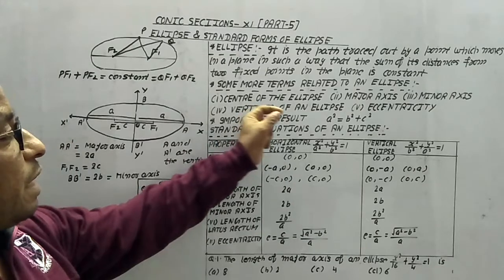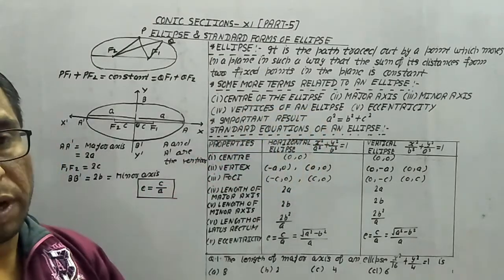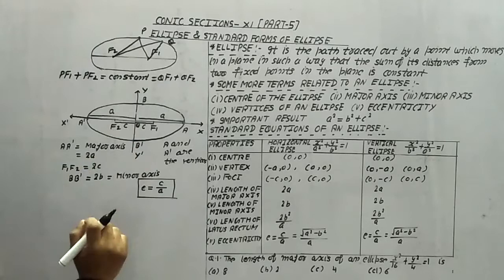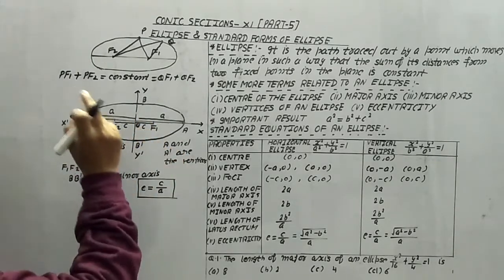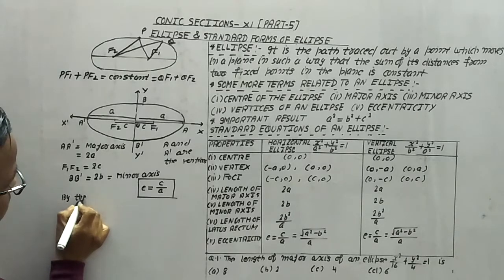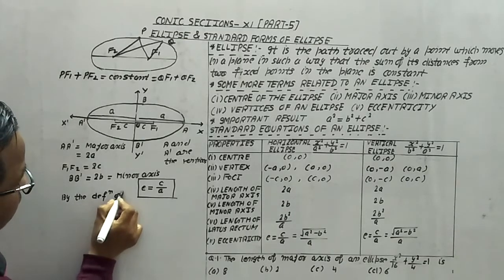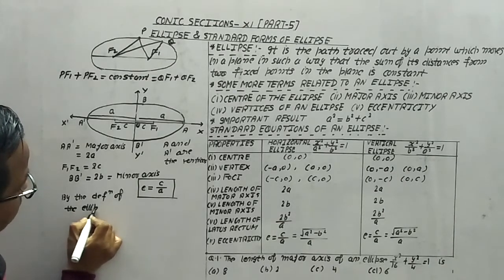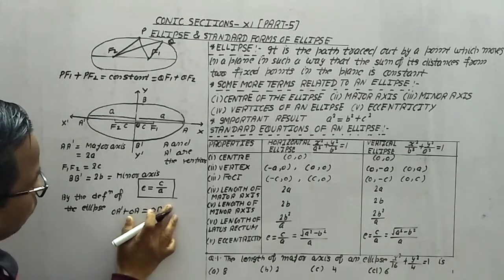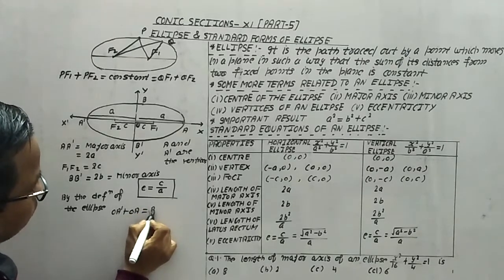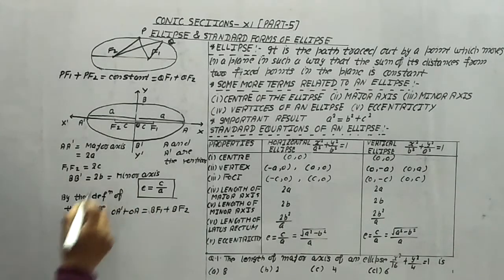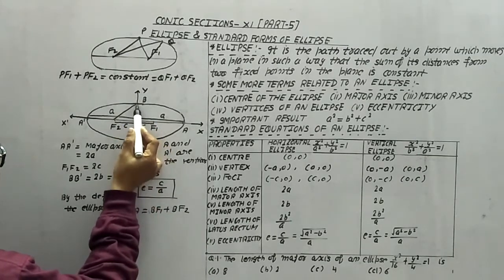There is a very important result: a² = b² + c². To prove this, by the definition of the ellipse, the sum of distances must remain constant. So we observe that OA' + OA must equal BF1 + BF2. We join the point B to the foci.